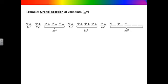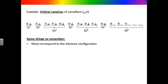Here is an orbital notation diagram using vanadium as the example. Notice that the orbital notation diagram corresponds to the electron configuration of vanadium: 1s2, 2s2, 2p6, 3s2, 3p6, 4s2, 3d3. The lines in the diagram represent the orbitals. Notice that one line is drawn for each s sublevel, three lines are drawn for each p sublevel, and five lines are drawn for the d sublevel.